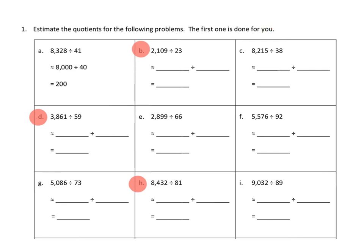Let's take a look at how they've done this first one. In this problem, it looks like they started with a fairly large number, 8,328, and they were dividing by 41. They looked at that divisor first and said 41, well that's close to just 40. And then they started to look for numbers that would be easily divisible by 40. We know that 8 is easily divisible by 4, so we can probably guess that something like 8,000 would also be divisible by 40.